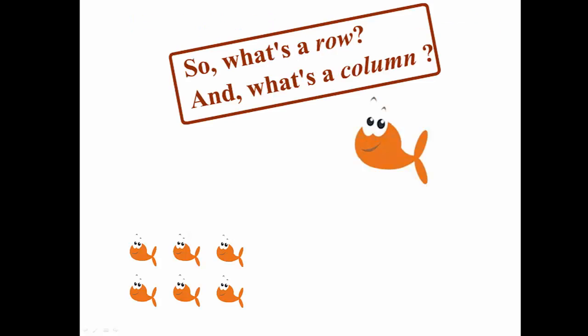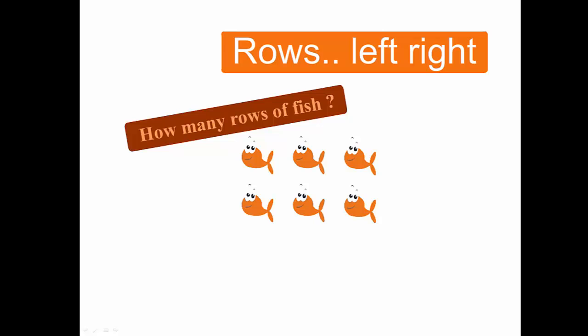So what are rows and columns exactly? Well, rows run left to right across the grid, and here we'd have two rows of fish.